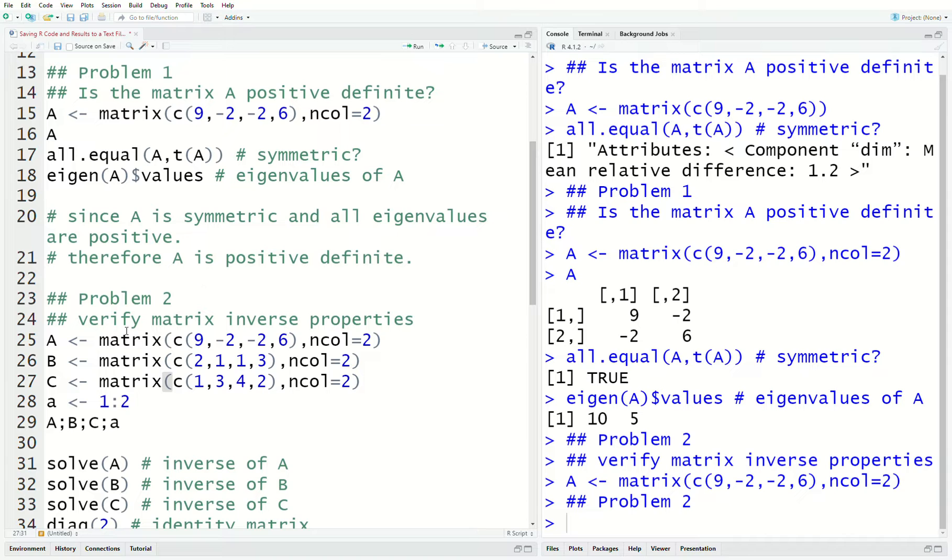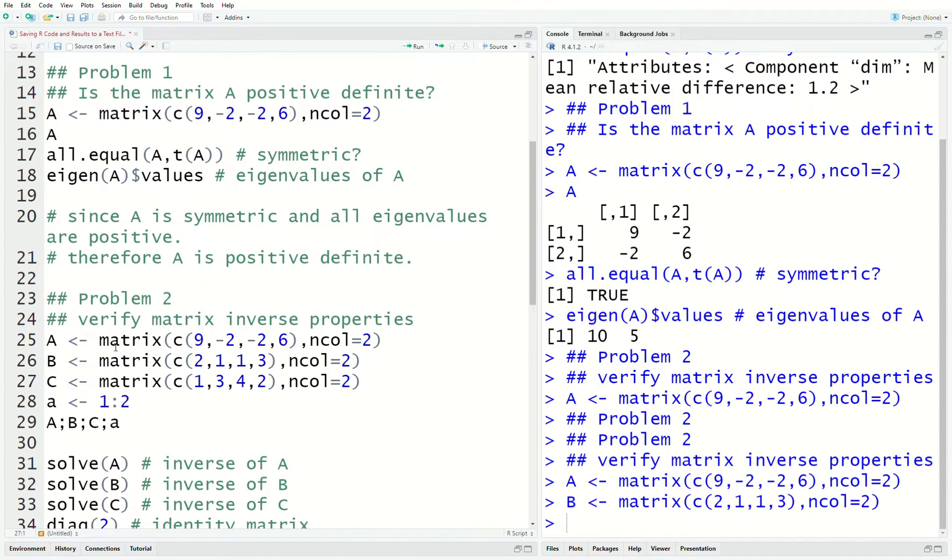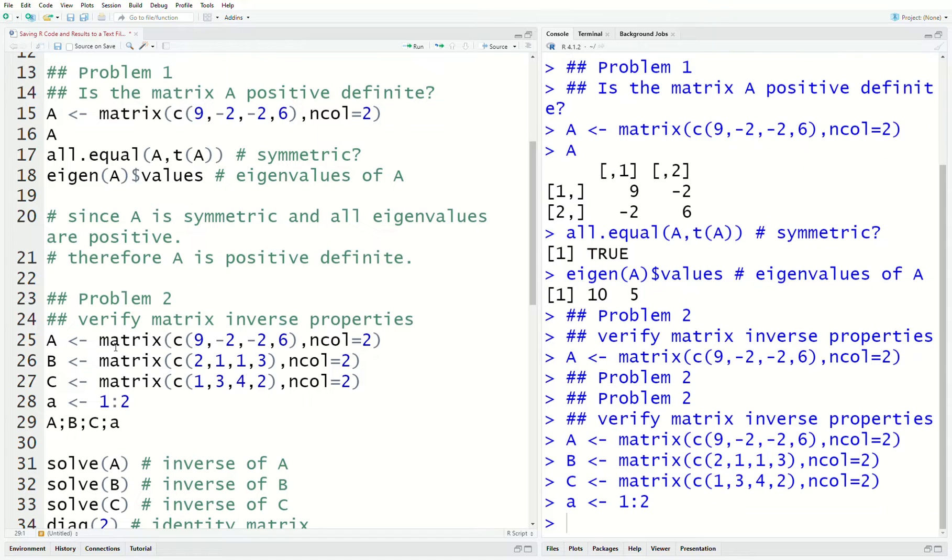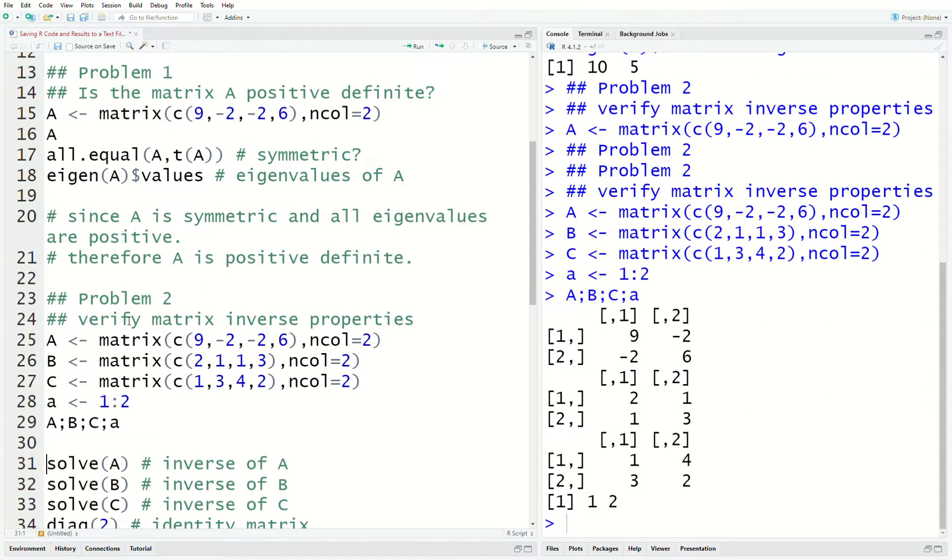So, problem two, verify the matrix inverse property. So, we enter matrices A, B, C and vector A. We print them out. The semicolon is the way you can do that in all in one line. So, there they are.